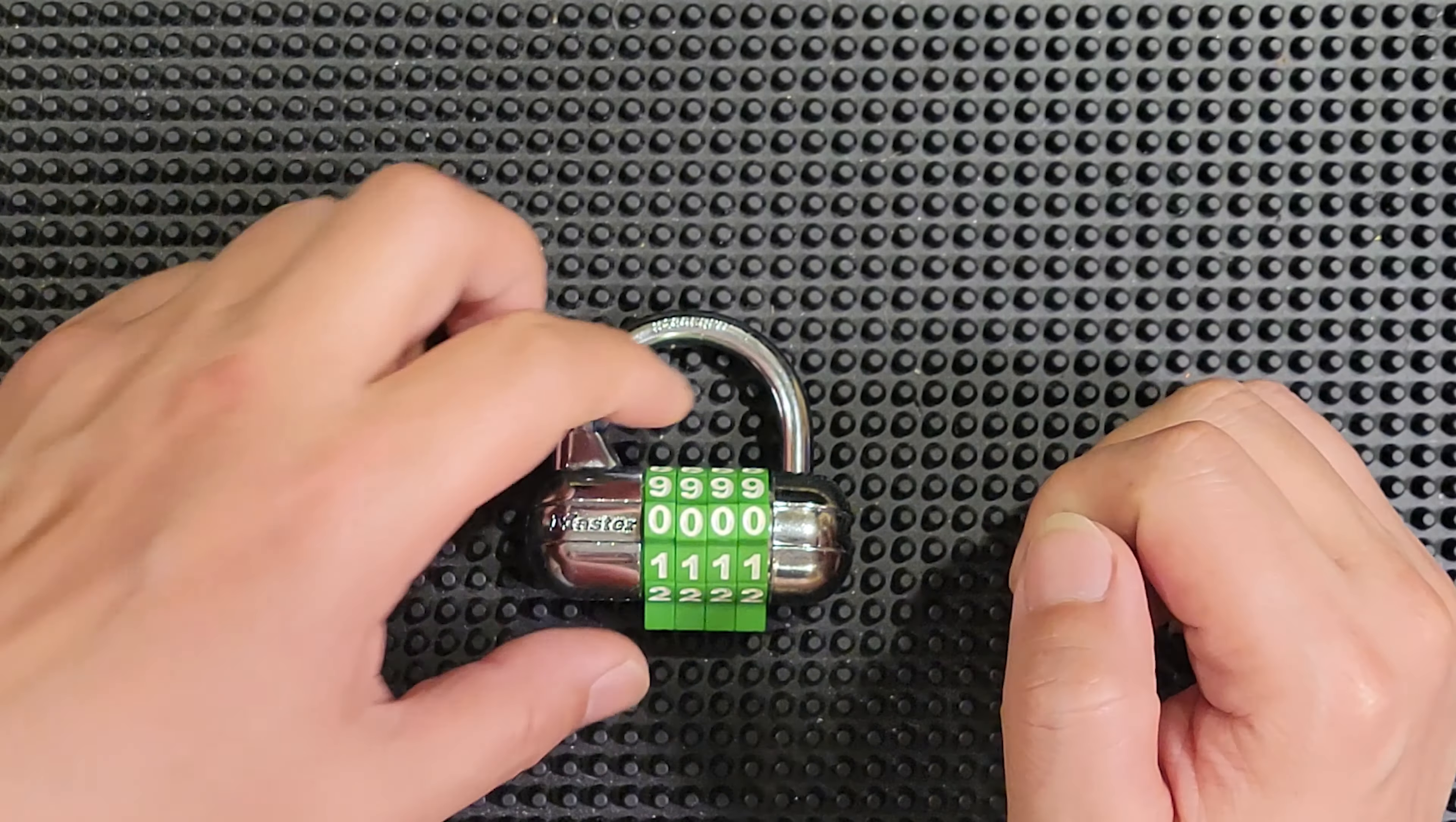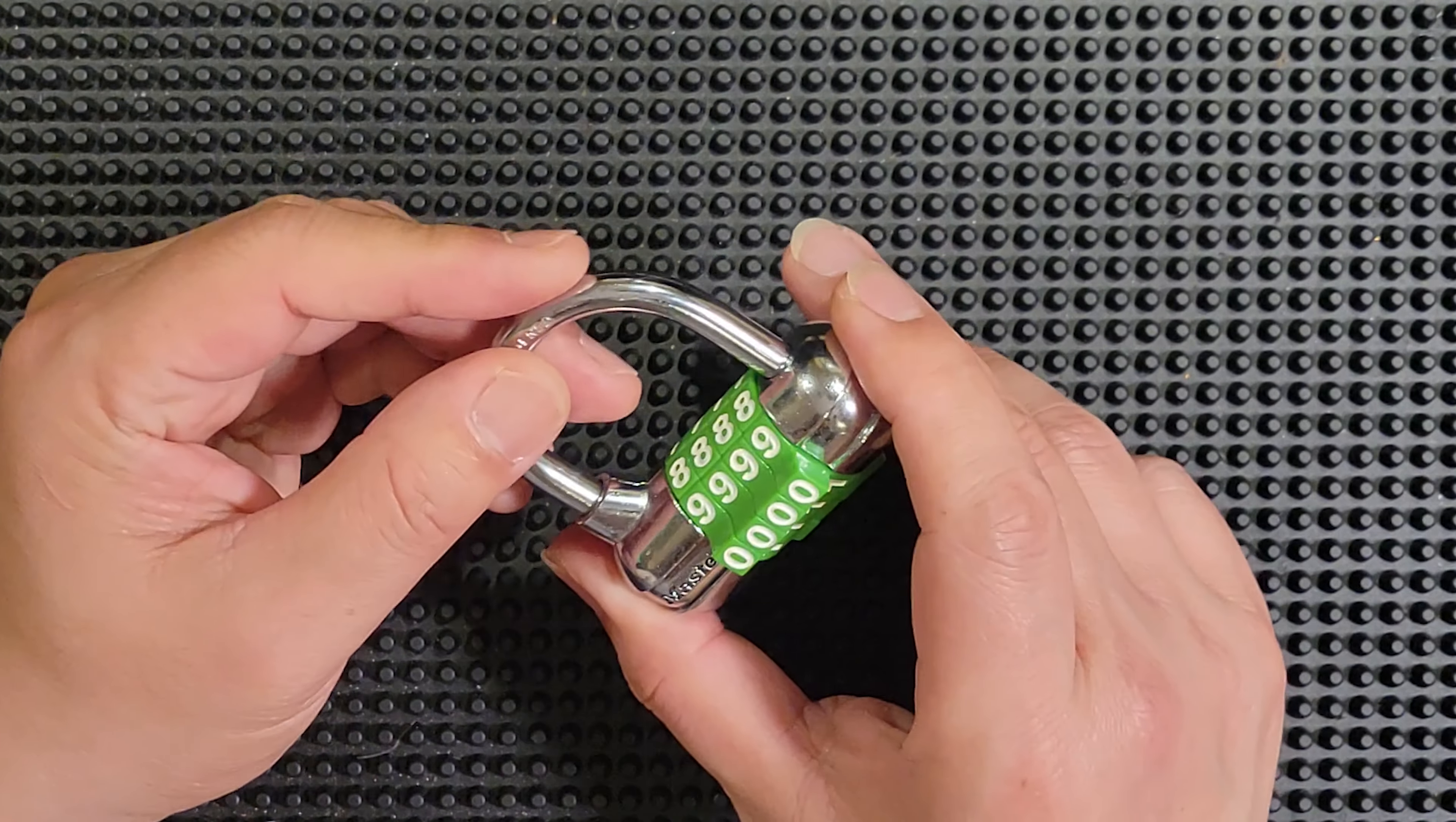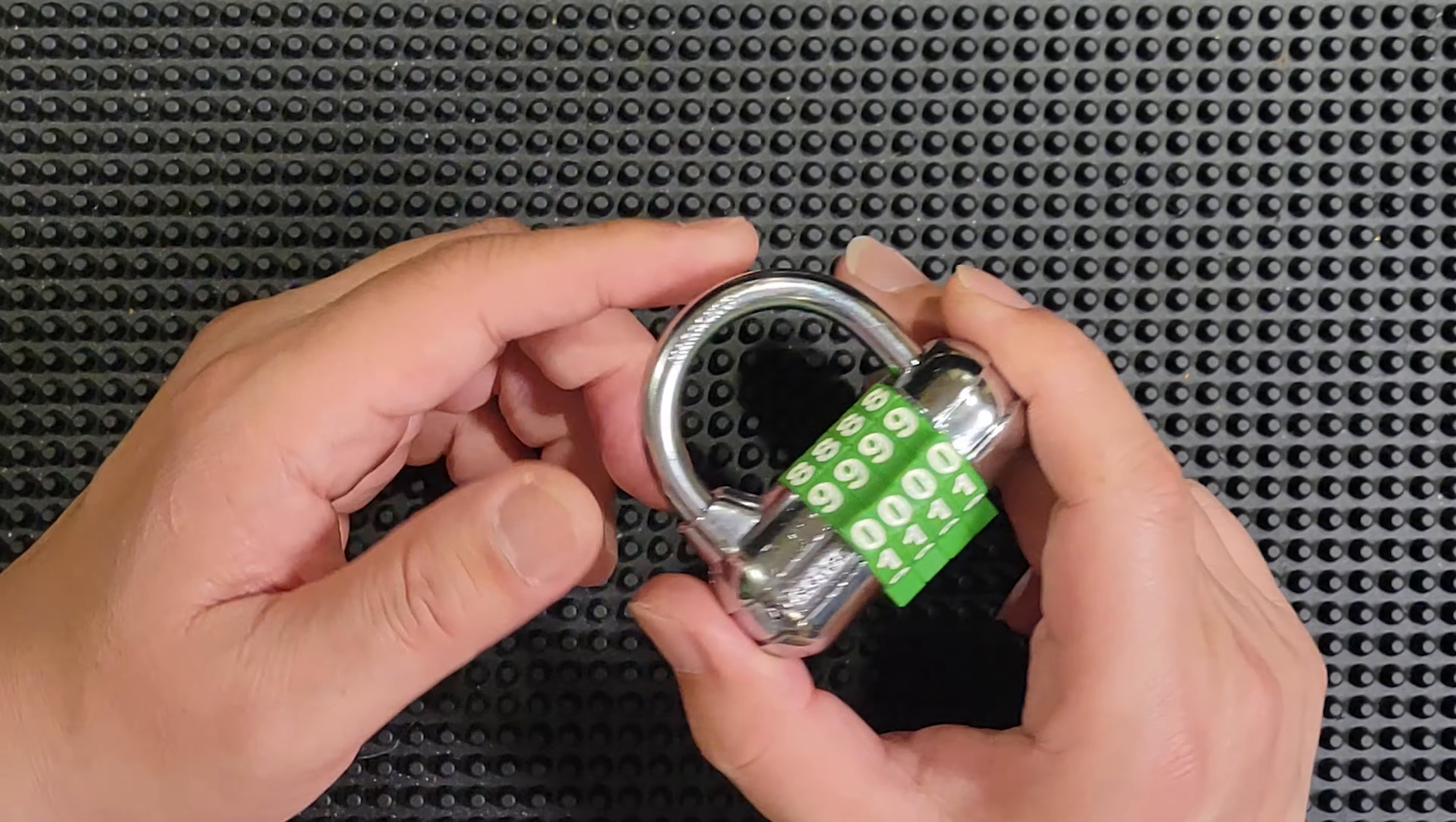This Master Lock 1523D is a low-security application padlock. It's a combination lock, and Master Lock gives it a security rating of 4 out of 10. But we all know that the Master Lock security ratings are more about the physical toughness of the lock than they are about the lock's resistance to being opened non-destructively without the key or combination.